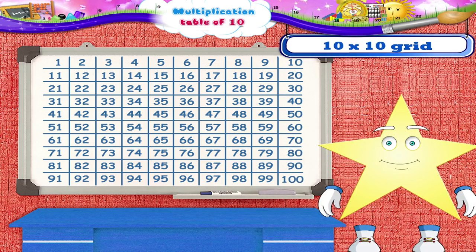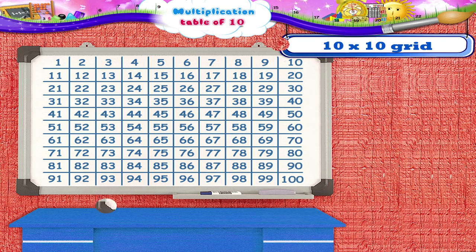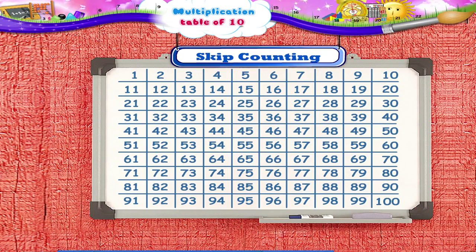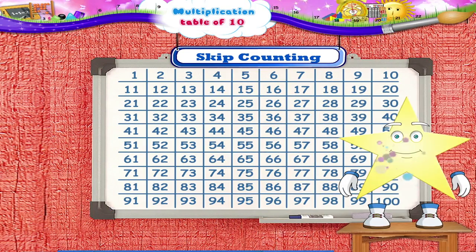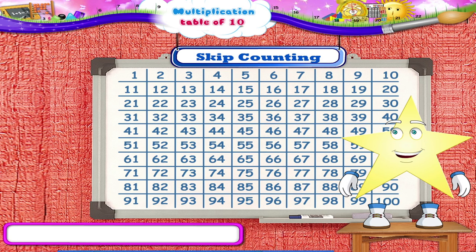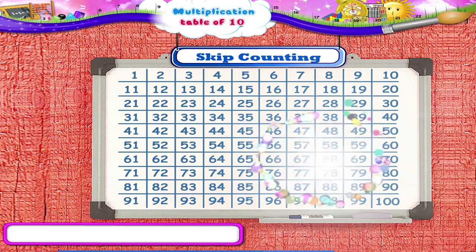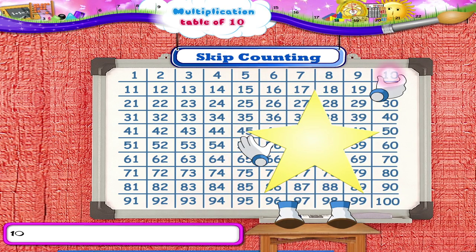No, no! We are not going to do addition or subtraction again. We are going to do some skip counting. Starting from 10, we have to count the numbers forward in the stages of 10 and keep a coin on it. Also write that number in the blank squares drawn below the grid. The first number is 10.